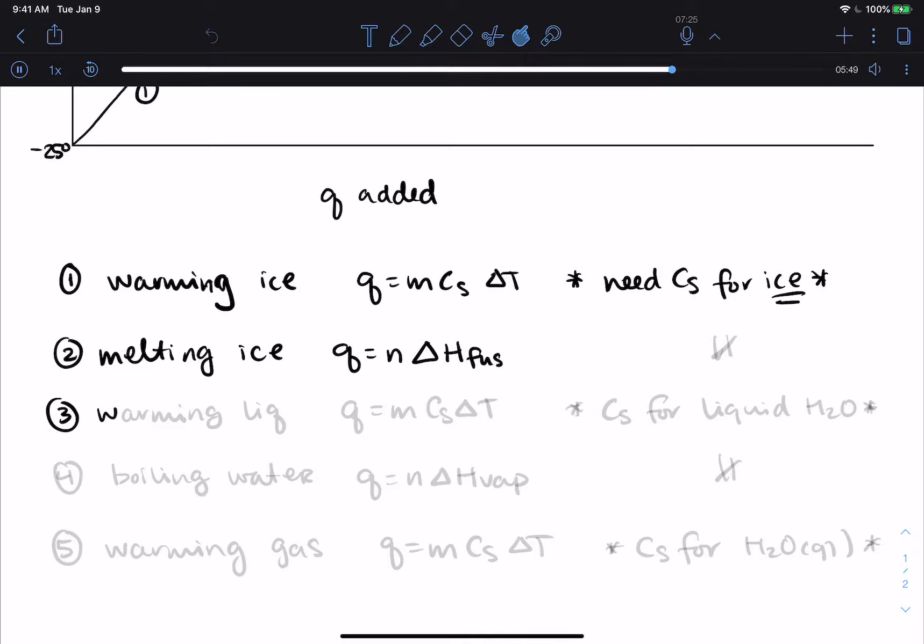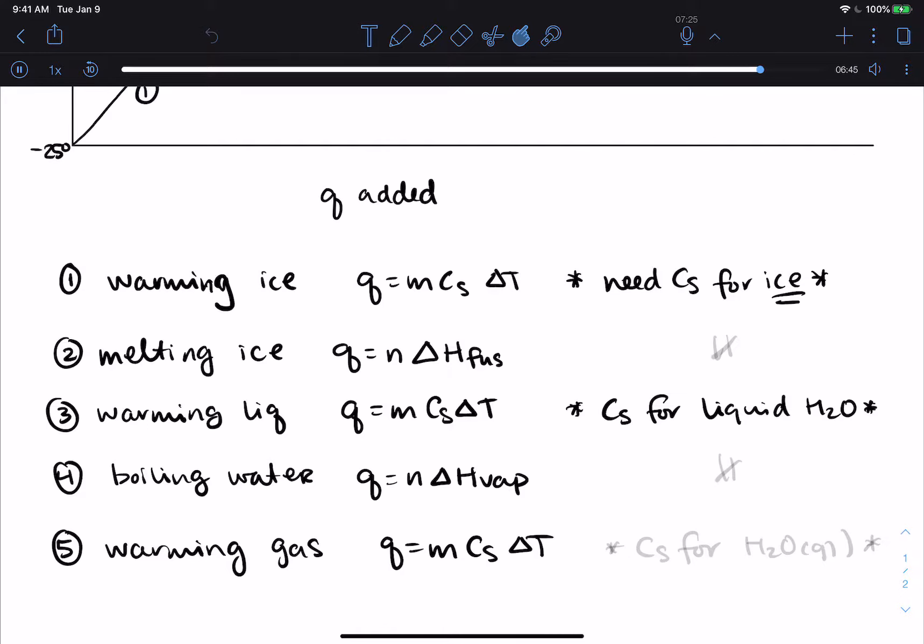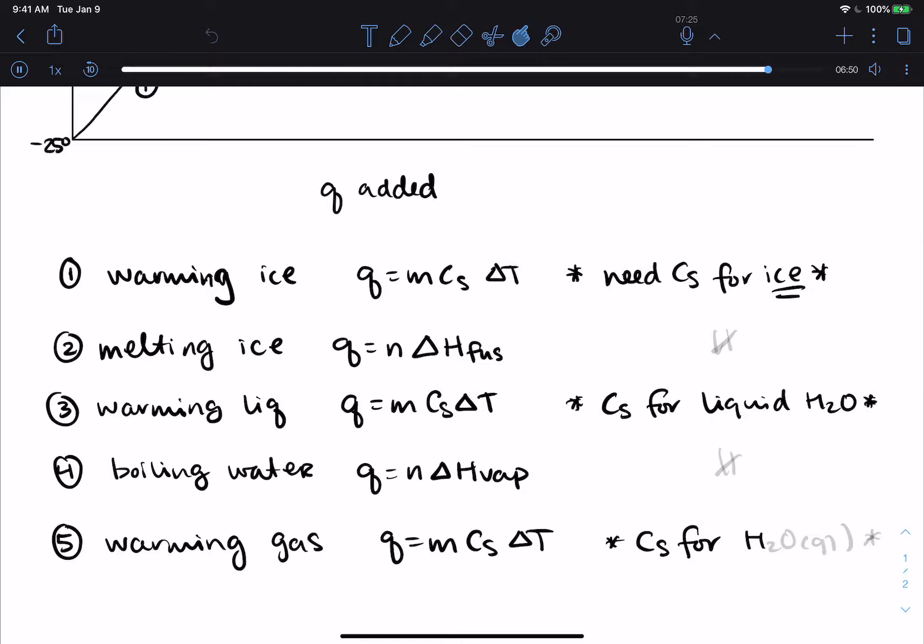So three is warming the liquid. So Q equals MC delta T and we need CS for liquid water. Four was boiling. So we were doing a phase change. So there's no temperature change. And again, you could do this as a unit conversion, but if you like having an equation, it's number of moles times delta H of vaporization. And then in the last part, everything had turned into a gas. So all of the heat that we put in goes toward warming the gas. So now we can do MC delta T, but we need a CS for H2O gas.